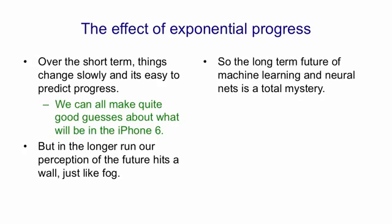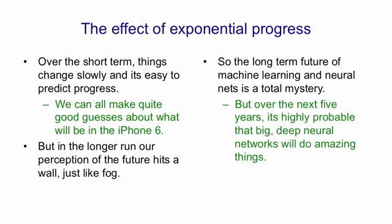So the long-term future of machine learning and neural nets is really a total mystery. We've no idea what's going to happen in 30 years' time. There's just no way to predict it from what we know now, because we're going to get exponential progress. In the short run, however, in a period of say 3 to 10 years, we can predict it fairly well. And it seems obvious to me that over the next five years or so, big deep neural networks are going to do amazing things.